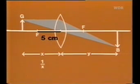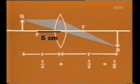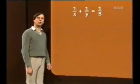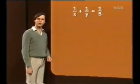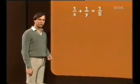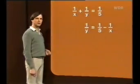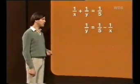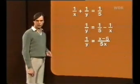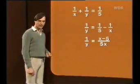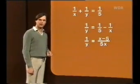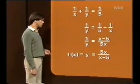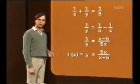Die Linsengleichung lautet: 1/x + 1/y = 1/f, also hier 1/5. Lösen wir diese Gleichung nach y auf: zunächst 1/y auf eine Seite, dann bilden wir auf der rechten Seite den Hauptnenner und bekommen 1/y = (x - 5) / (5x). Durch Kehrwertbildung erhalten wir schließlich f(x) = y = 5x / (x - 5).